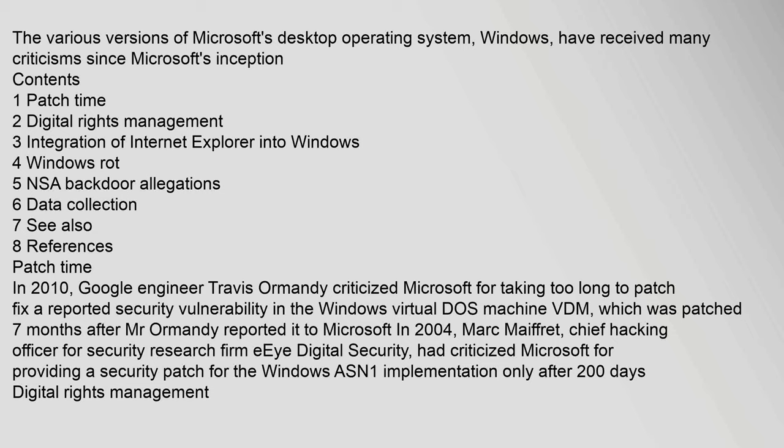Patch Time: In 2010, Google engineer Travis Ormandy criticized Microsoft for taking too long to patch a reported security vulnerability in the Windows Virtual DOS Machine (VDM), which was patched seven months after Mr. Ormandy reported it to Microsoft in 2004. Mark Mifrit, chief hacking officer for security research firm EEYE Digital Security, had criticized Microsoft for providing a security patch for the Windows ASN1 implementation only after 200 days.